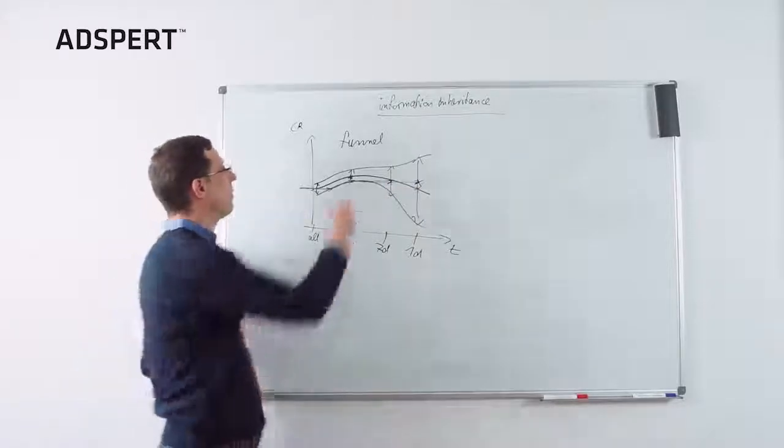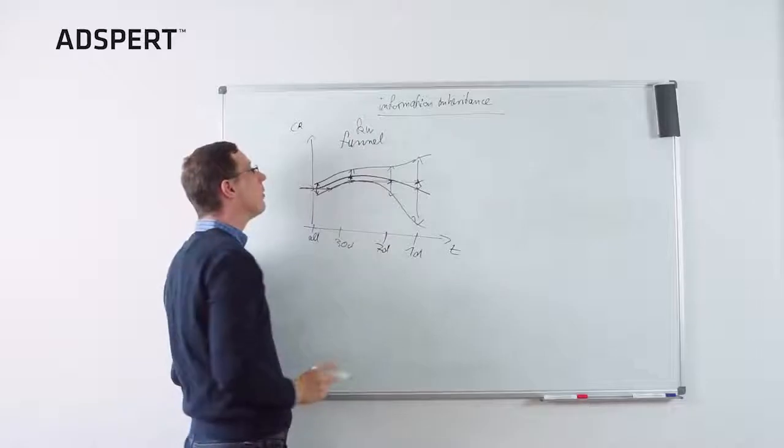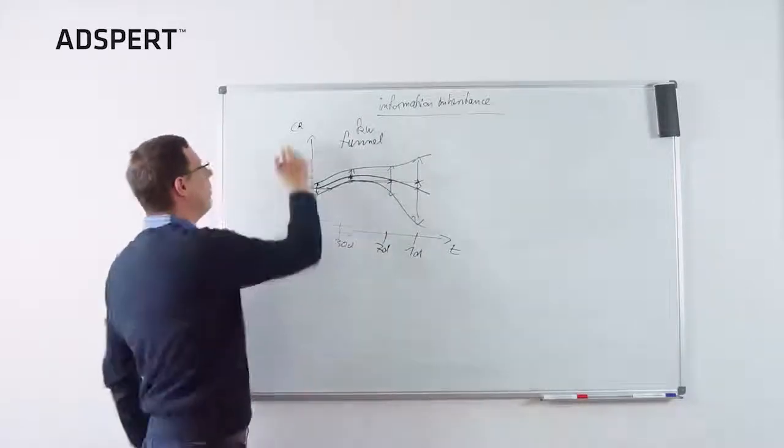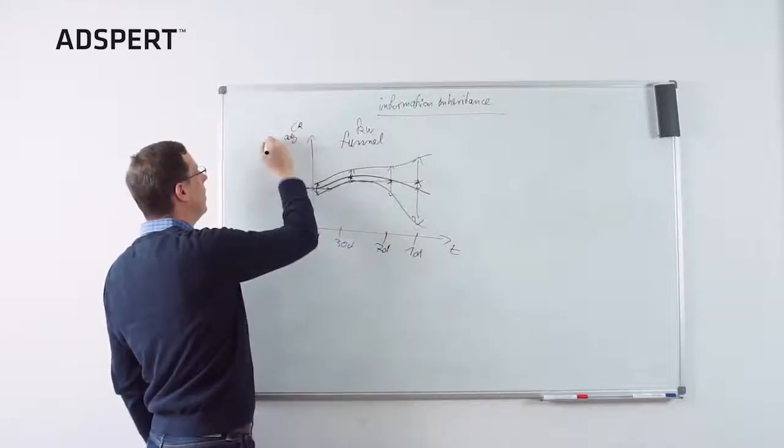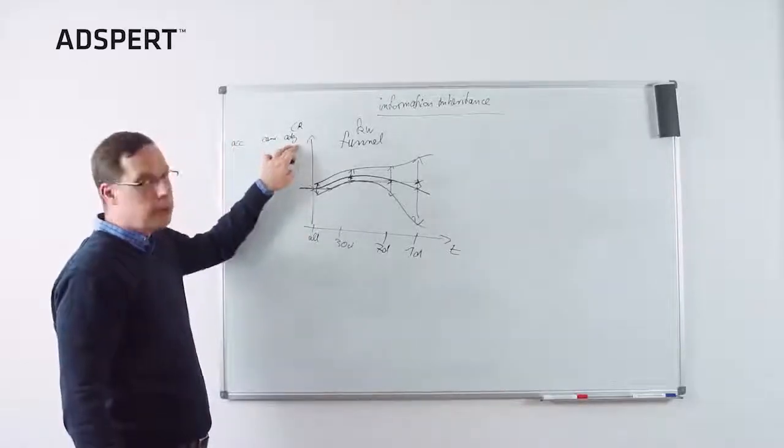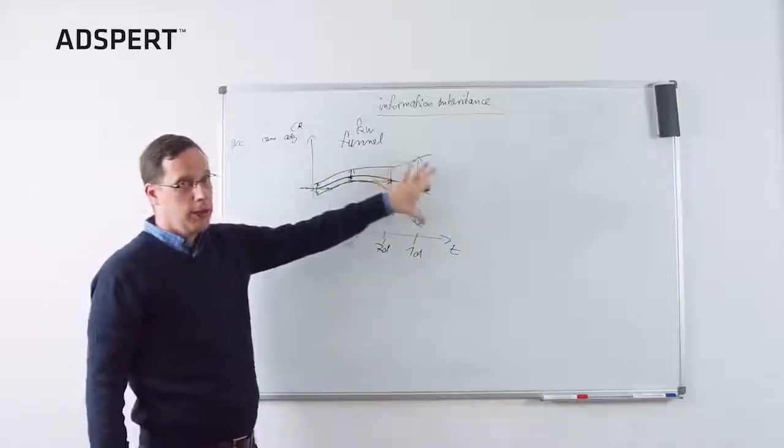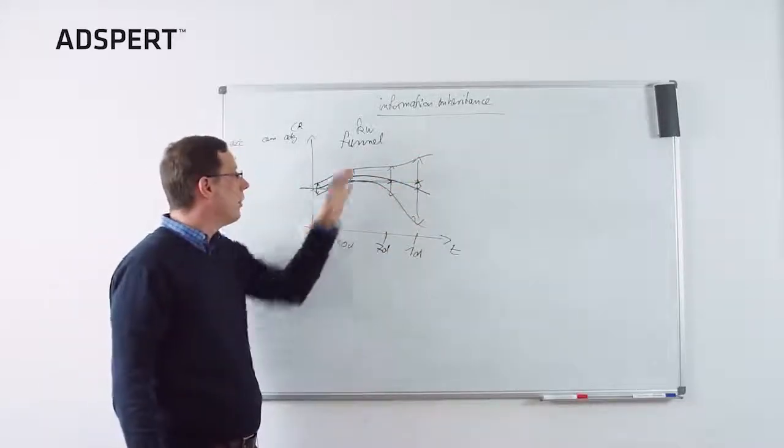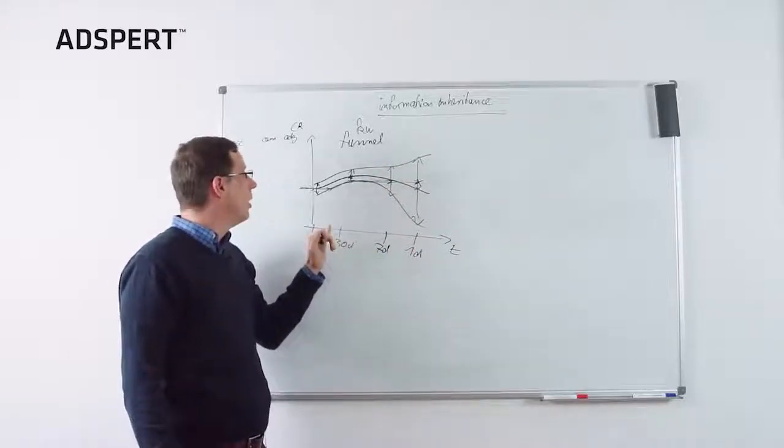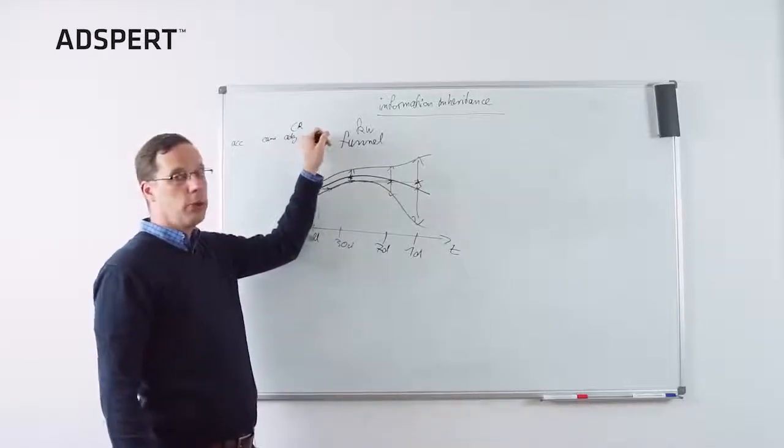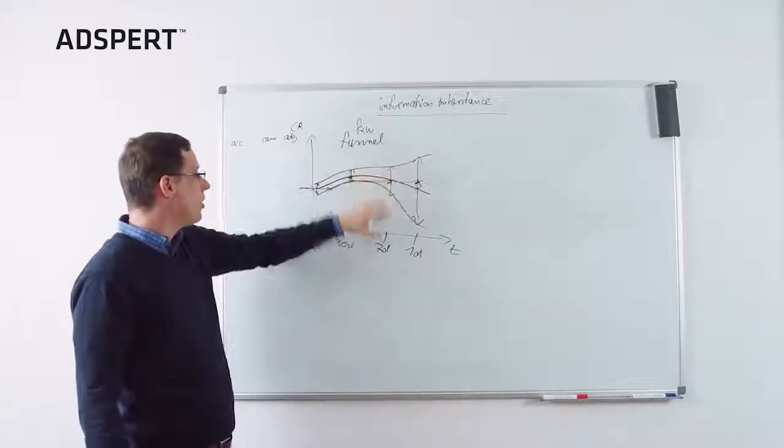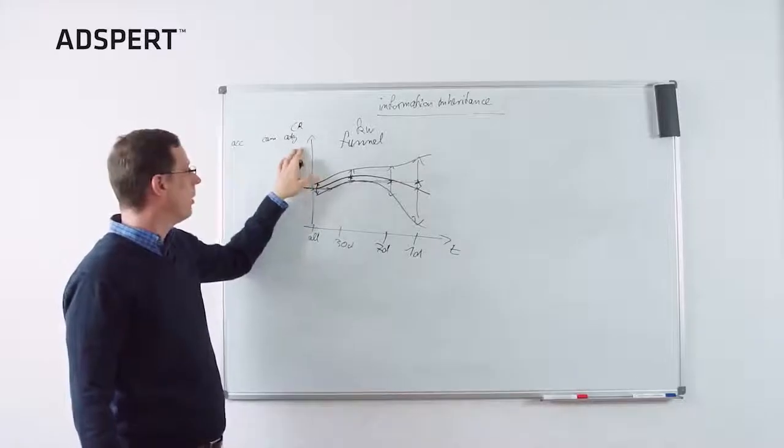What's the default? What you see is a funnel for a single keyword. Of course, you could do the same for the corresponding ad group, campaign or account. And the result of the ad group funnel is the input for the keyword funnel. Why? If you don't have enough data for a single keyword, even if you take a big time span, it makes sense to use the corresponding ad group data. So that's done. Information inheritance taking into account the number of observations, aggregation over time and over the account hierarchy.